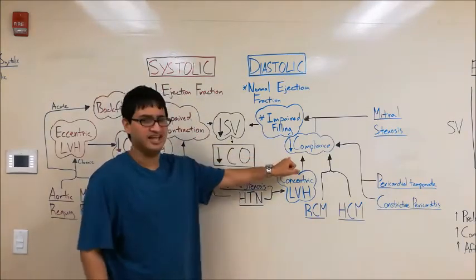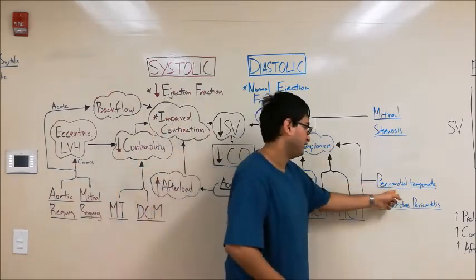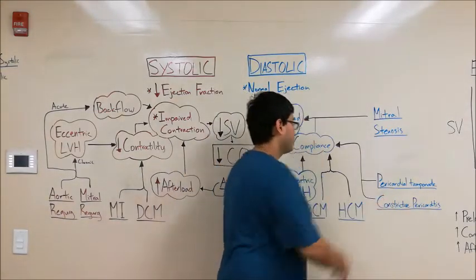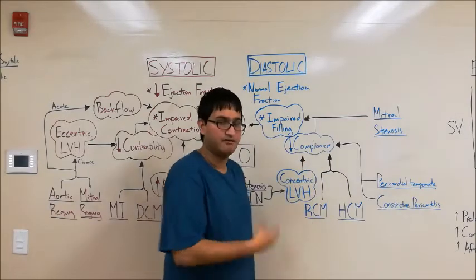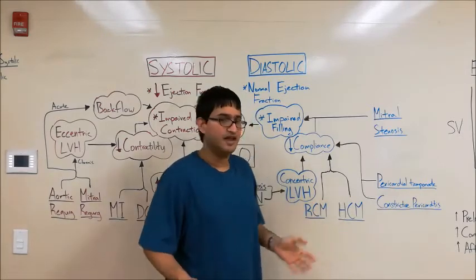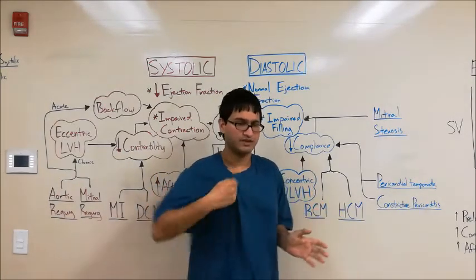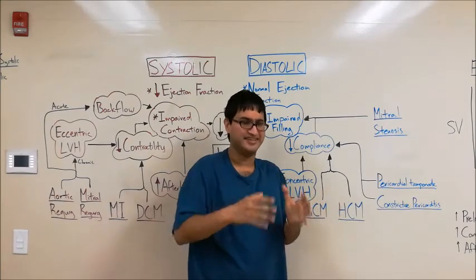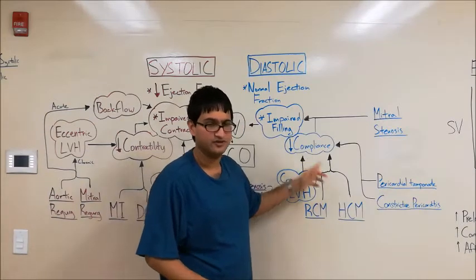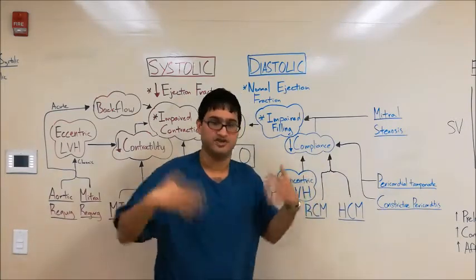Finally, let's talk about pericardial tamponade and constrictive pericarditis. These are pericardial diseases — they do not affect the compliance of the ventricle itself. However, they affect the compliance of the heart as a whole, because problems in the pericardium prevent the ventricle from expanding into the pericardial space. Even though the ventricle can expand on its own, it's surrounded by a super stiff pericardium, so functional compliance is still decreased. This is a functional decrease in compliance rather than a decrease in ventricular compliance itself.